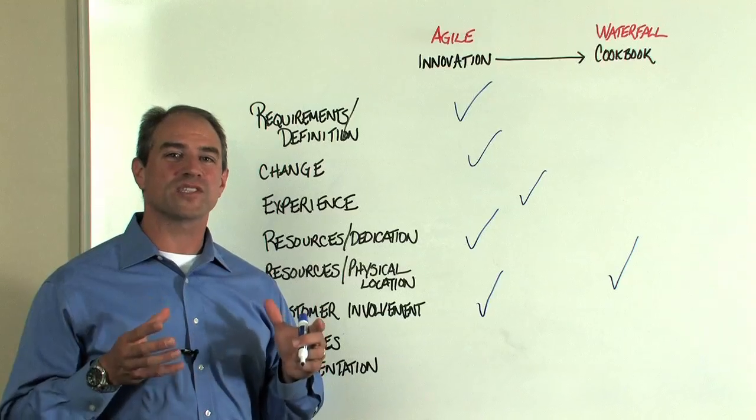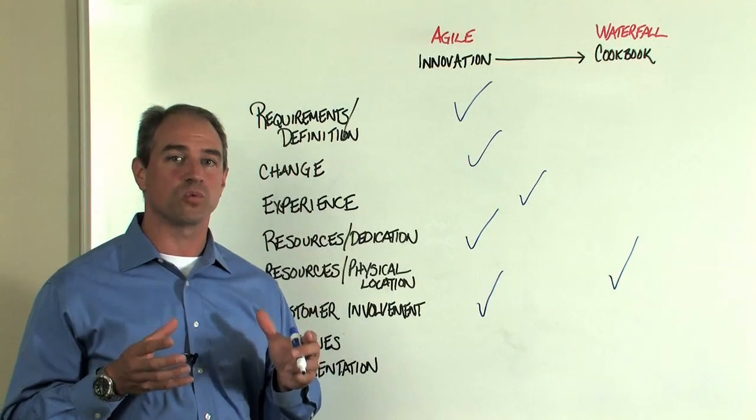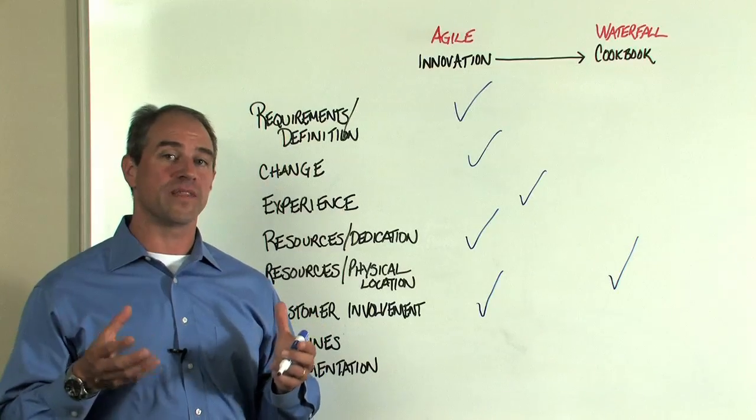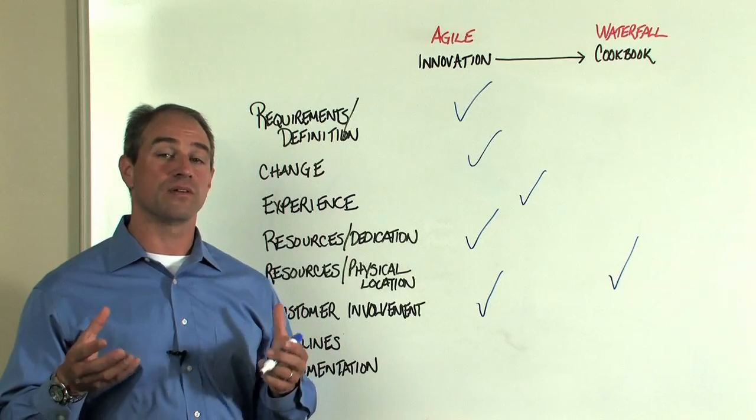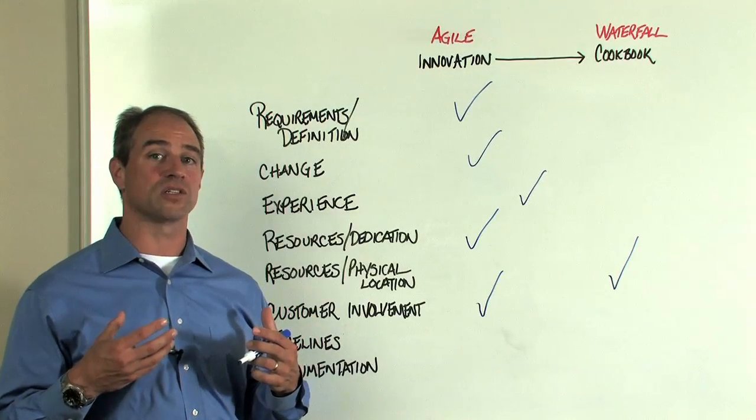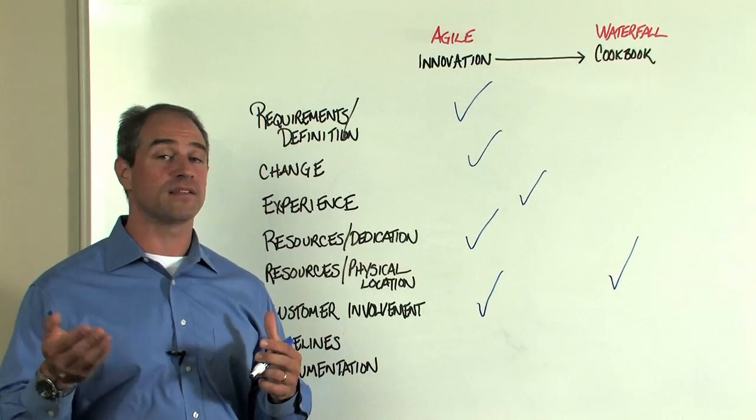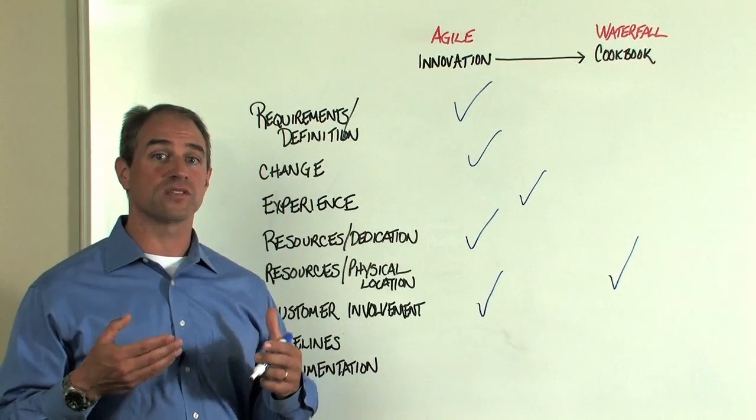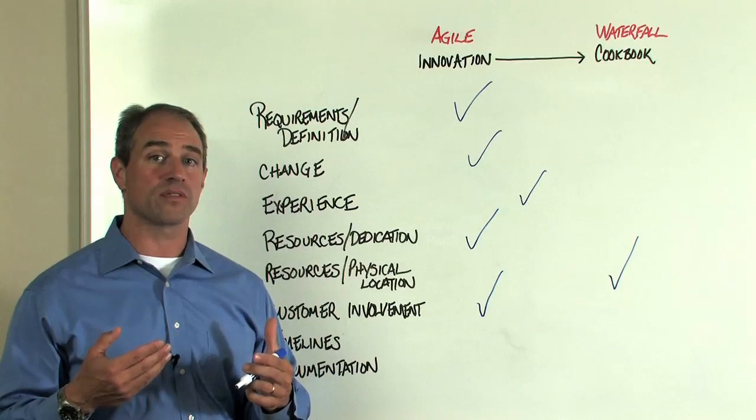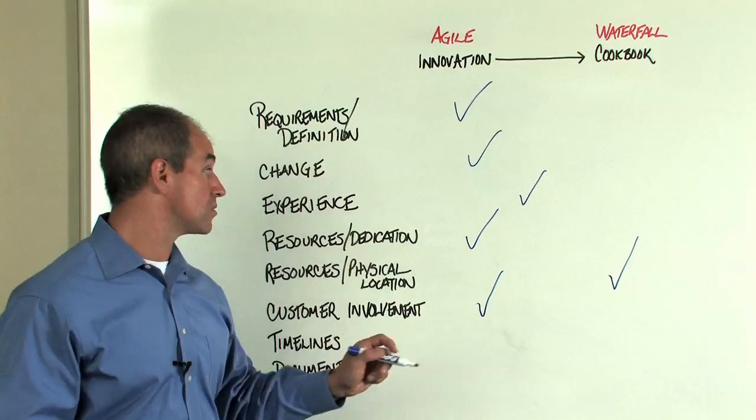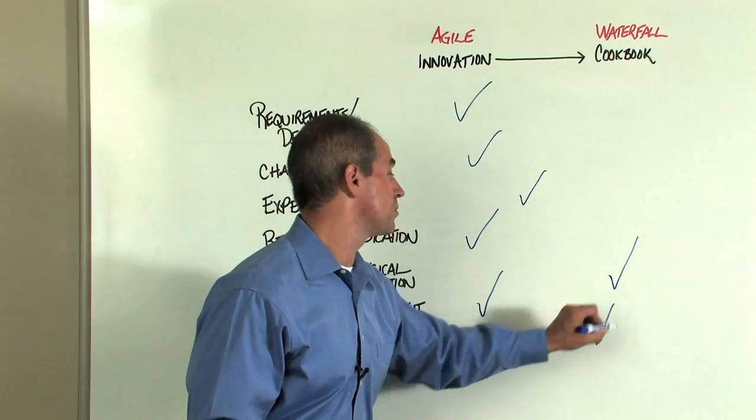Timelines. Do we have fixed timelines or due dates that we have to work towards or are we a little bit more flexible in what we can deliver and the timelines in which we can deliver them? If we're a little bit more flexible, we may be more agile, but if we have financial requirements, quarter end, year end, calendar restrictions, other types of initiatives that we have to comply with, we may have more restrictions on timelines. And let's say we do. So let's say for timelines, we may be a little bit more constricted.